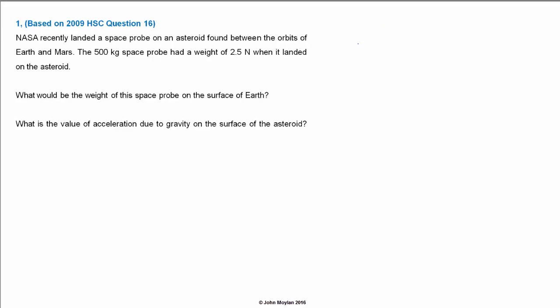We'll write the values given in the question and in the data sheets so they're all in one place and easy to find. Mass of the space probe M equals 500 kilograms. The weight of the space probe on the asteroid, F_g with subscript 'a' for asteroid, equals 2.5 Newtons. We need to calculate the force due to gravity on the Earth (subscript 'e') and the acceleration due to gravity on the asteroid (subscript 'a'). From the HSC data tables, acceleration due to gravity on Earth equals 9.81 m/s².